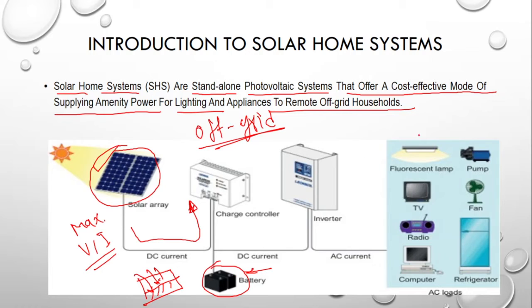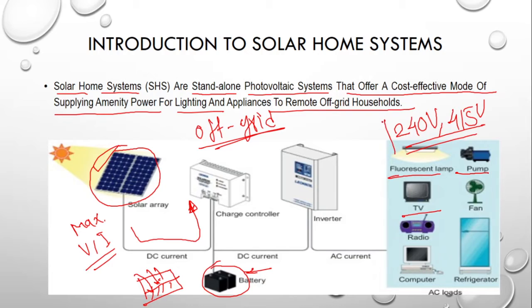Whenever we use home appliances in the solar home system that run on single-phase voltage — that is 240 volts — or three-phase at 415 volts, generally the solar home system operates at 240 volts. Appliances such as televisions, radios, computers, and refrigerators in AC format consume the standard voltage of 240 volts.